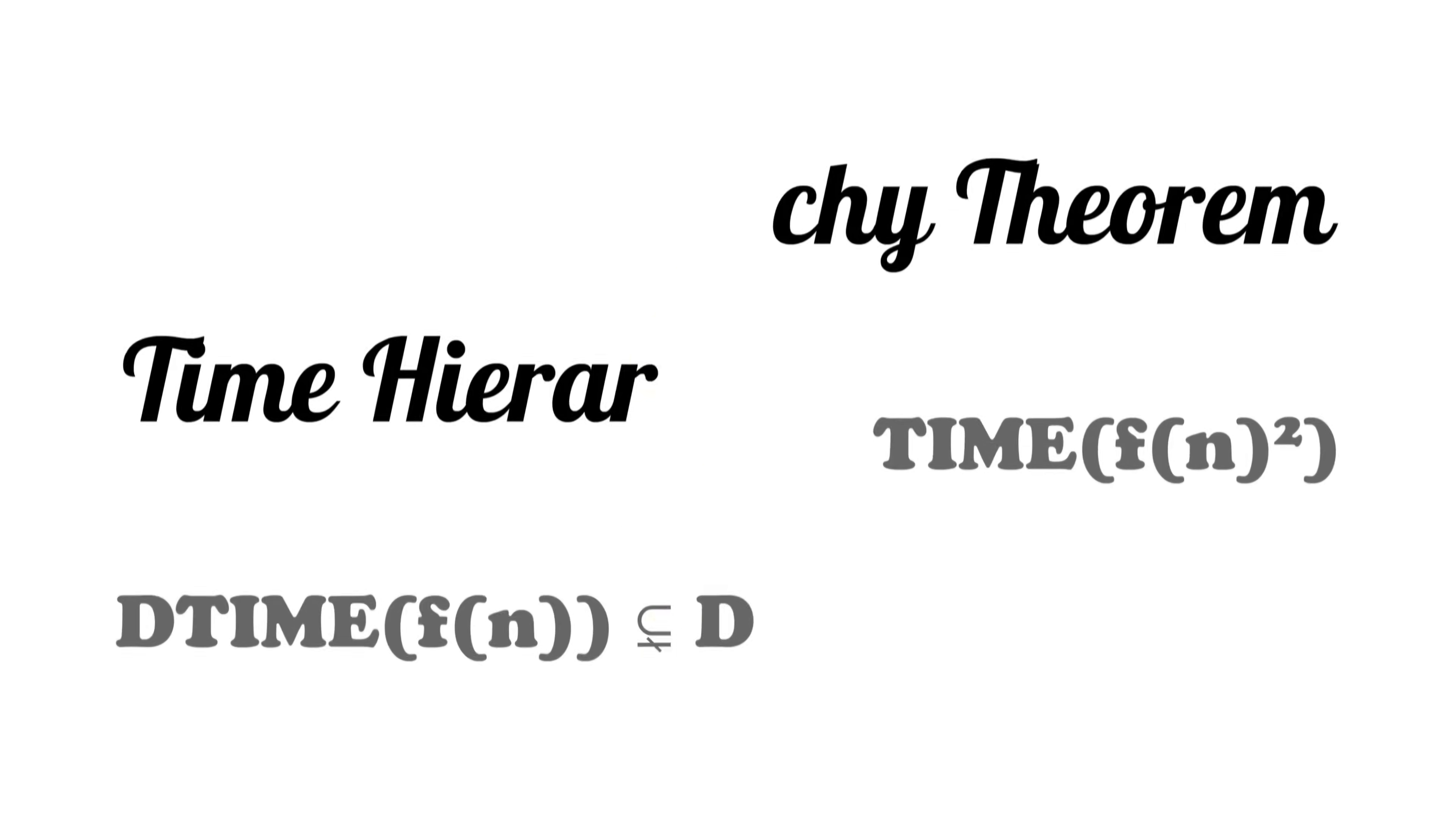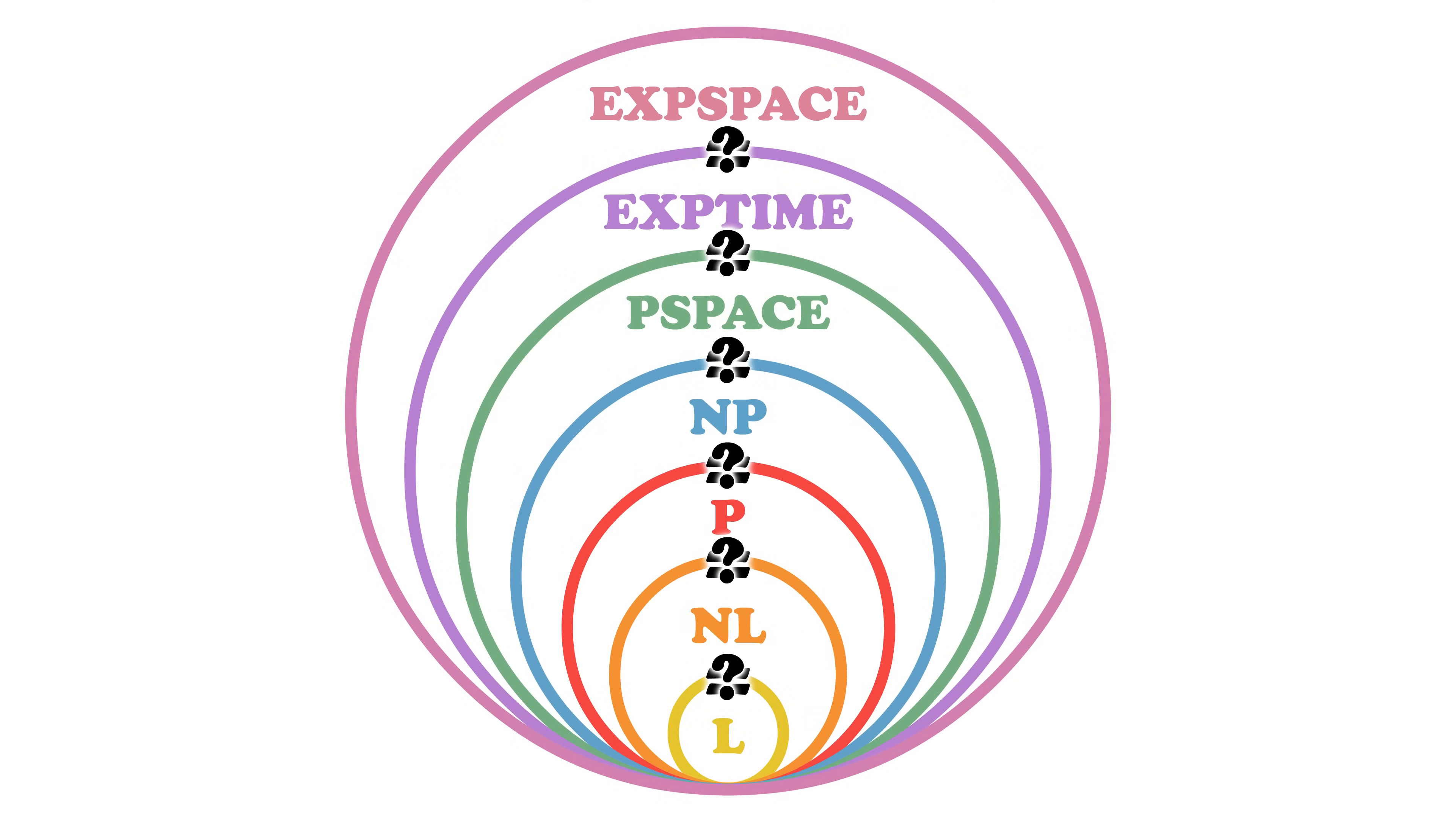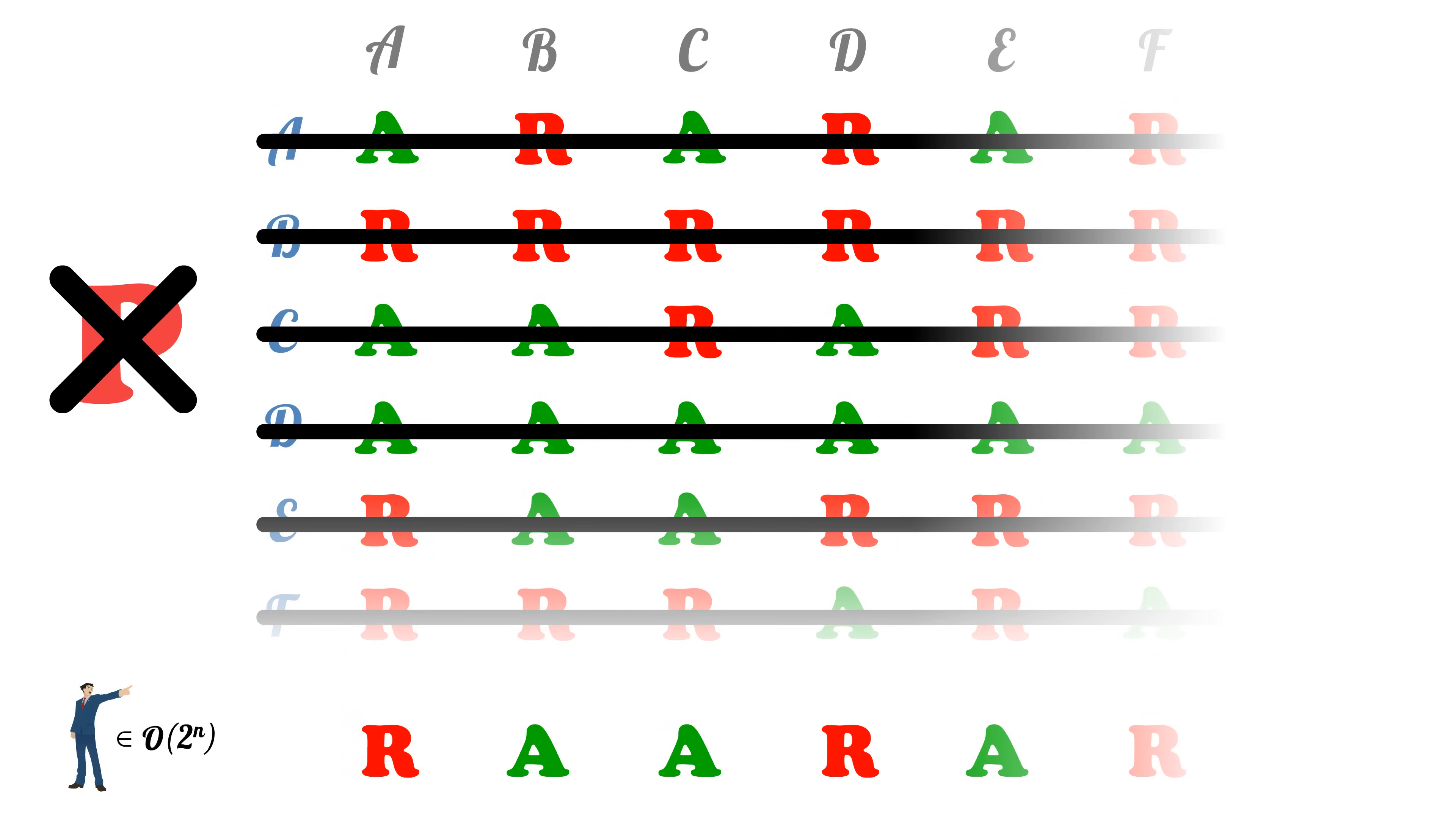With such a powerful technique, why are there still so many unsolved problems in complexity theory? Could we use this argument on P versus NP? Well, going back to the argument, if we tried to replace exp time with NP, how would we show that our contradictor is also in NP?